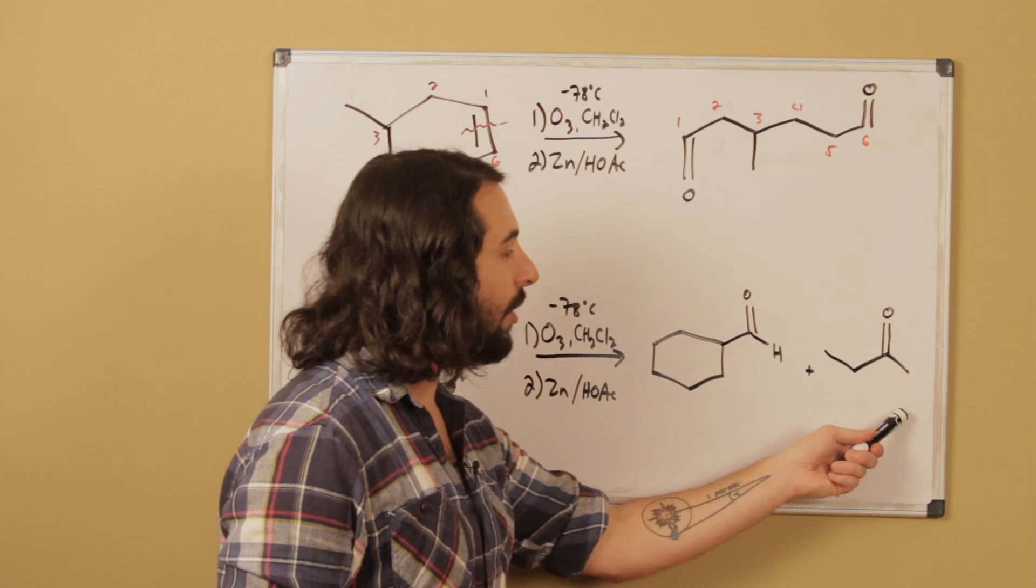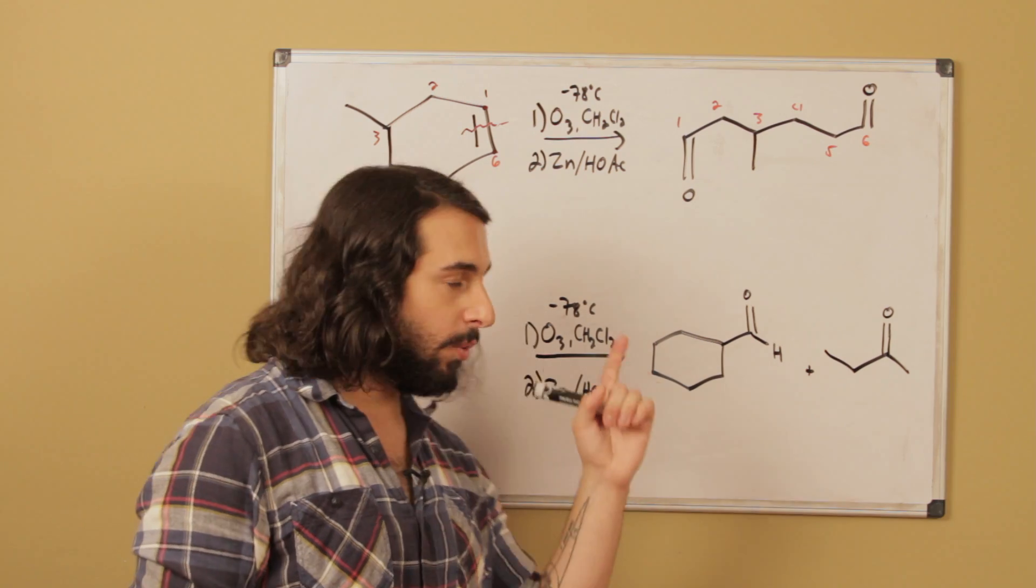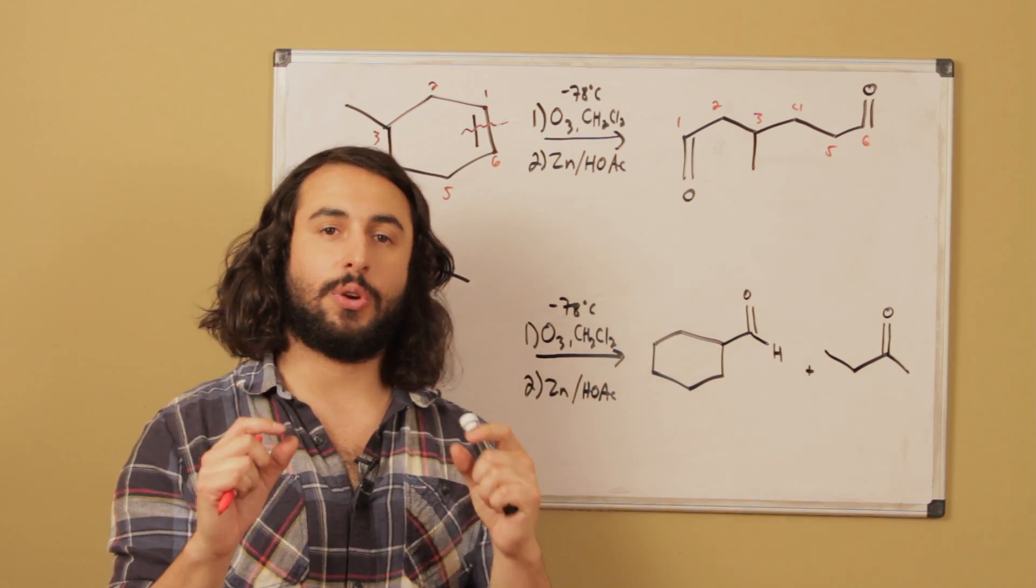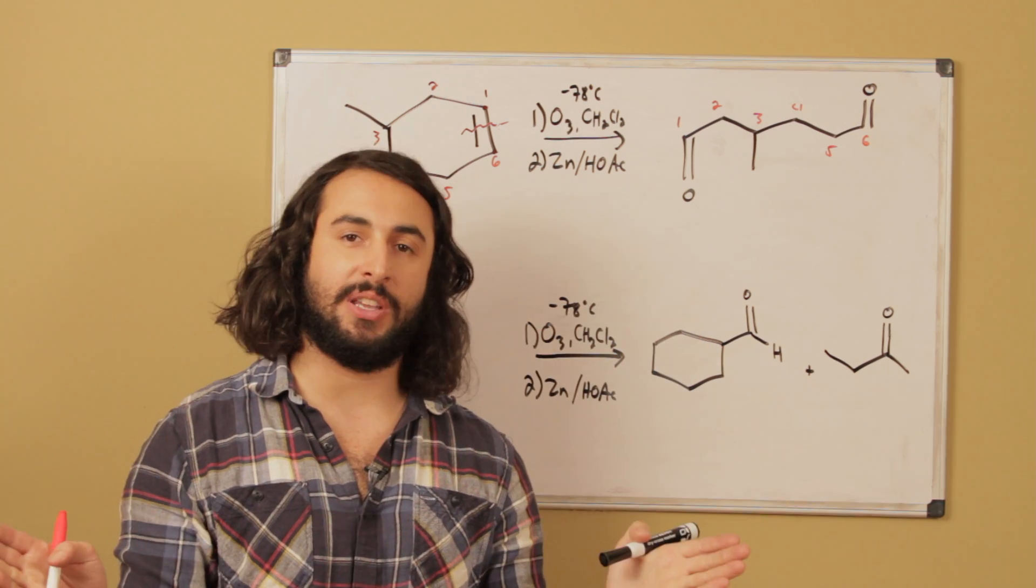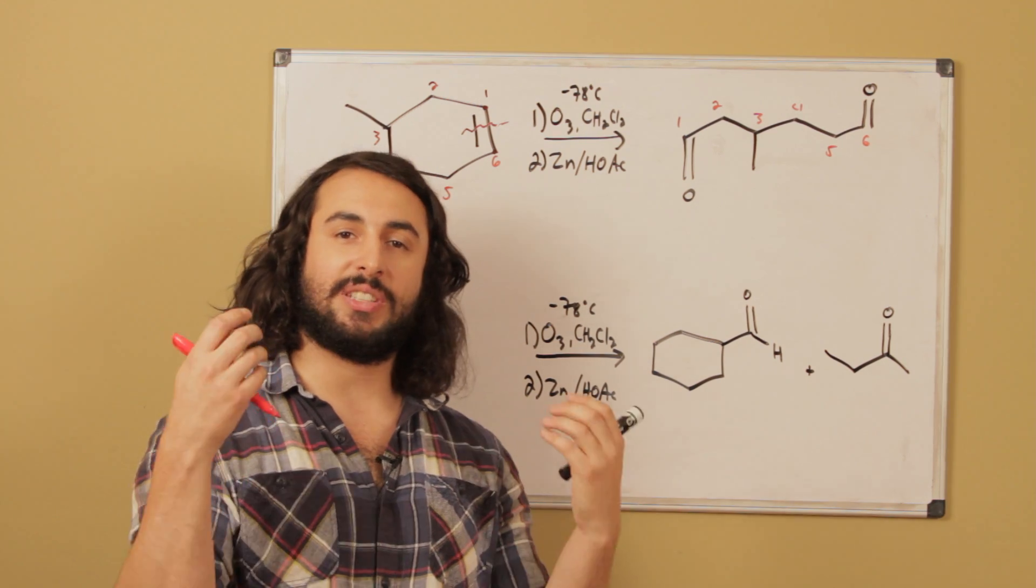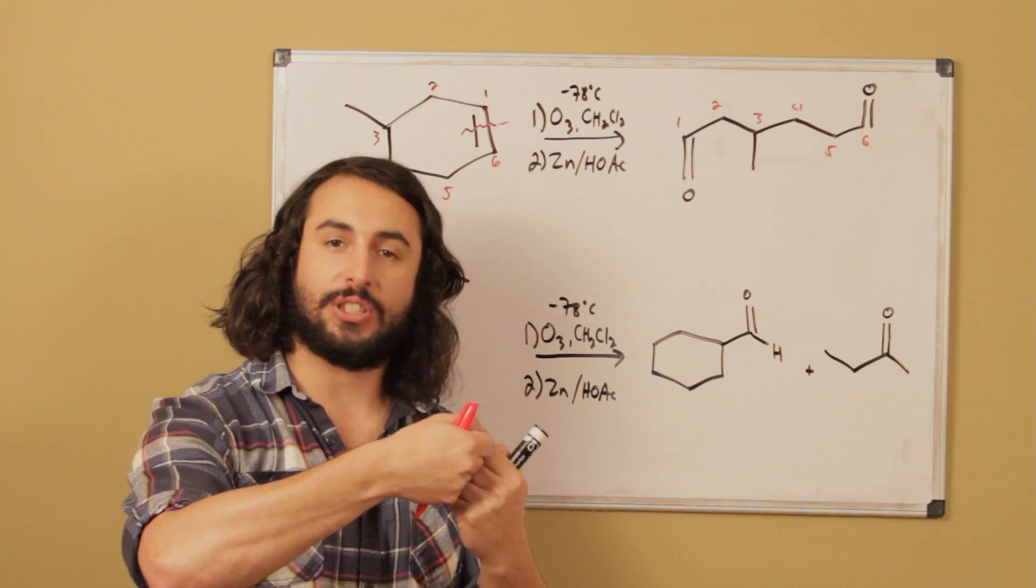Now let's take a look at these ozonolysis products that we have. If ozonolysis takes the two carbons that were in a double bond and turns them into carbonyls, if we're doing retro ozonolysis all we need to do is take the two carbonyls and basically smoosh them together.